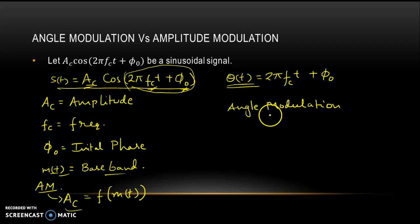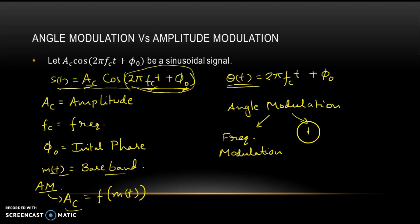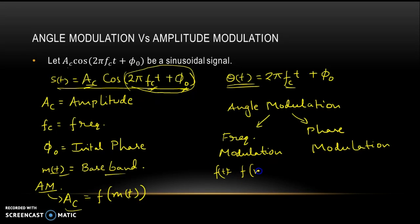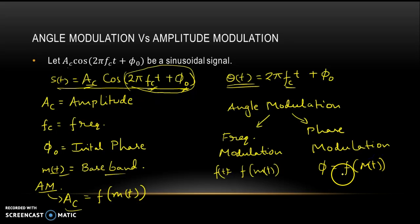In angle modulation we can do two different modulations: one is frequency modulation and another is phase modulation. If the instantaneous frequency f(t) is a function of the baseband signal, we call it frequency modulation. And if φ is a function of the message signal, we call it phase modulation. So angle modulation is basically modifying this angle with the help of the baseband signal.